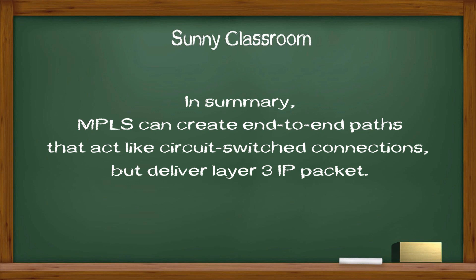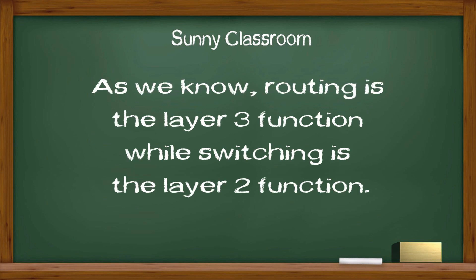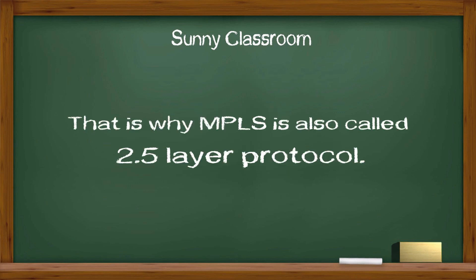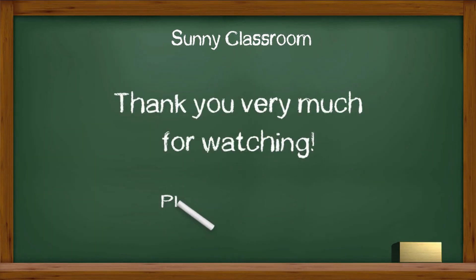In summary, MPLS can create end-to-end paths that act like circuit-switched connections but deliver layer 3 IP packets. As we know, routing is the layer 3 function while switching is a layer 2 function. MPLS makes those routers on the internet act like switches on a local network. That's why MPLS is also called a 2.5 layer protocol. I hope this video is helpful.